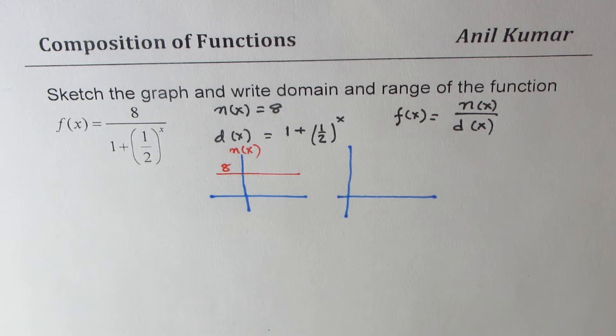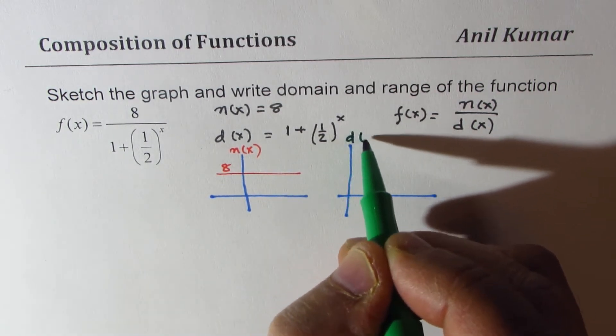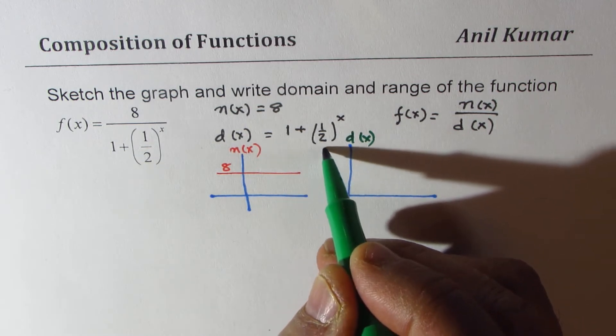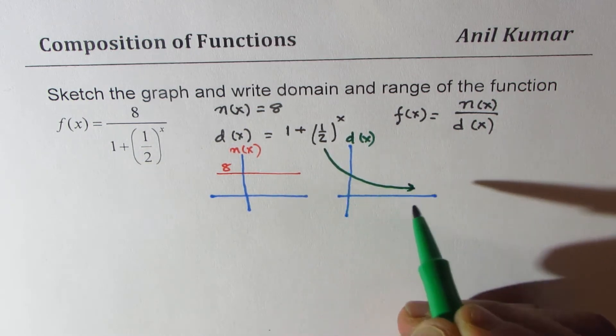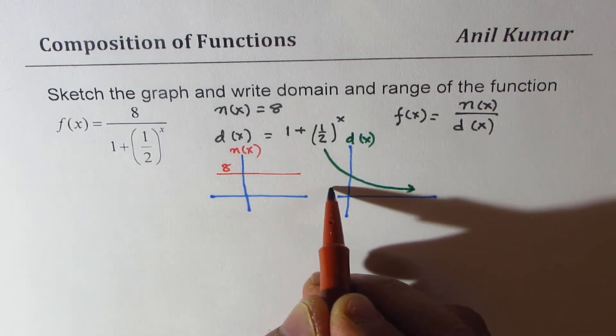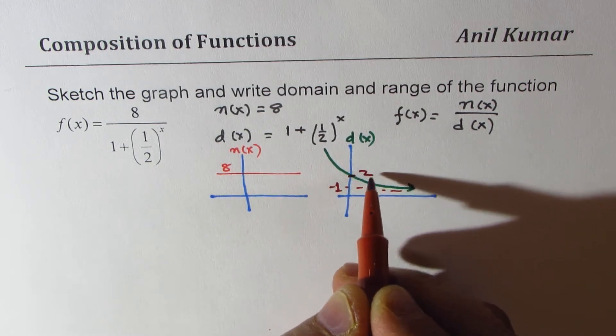Now the other function which is the denominator part, I'm doing just the denominator part, not as 1 over, 1 plus half to the power of x, so it is kind of a decaying function kind of like this, where the horizontal asymptote will be 1 and this point is going to be at 2.